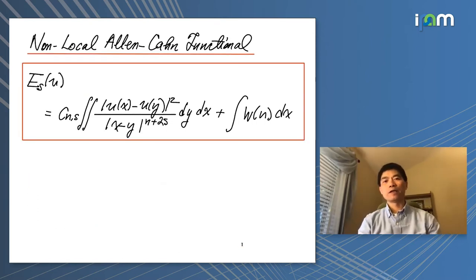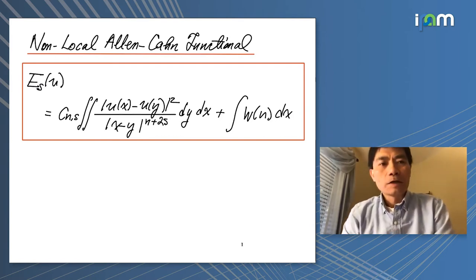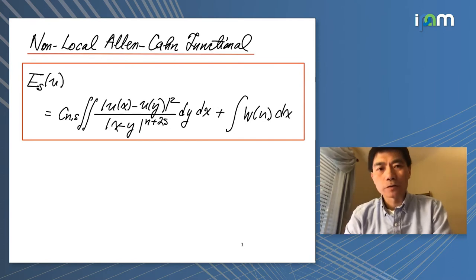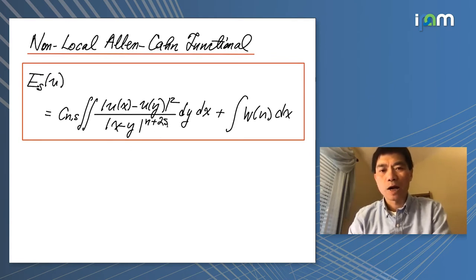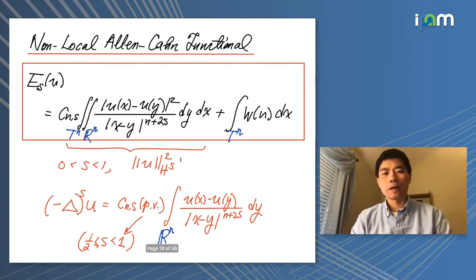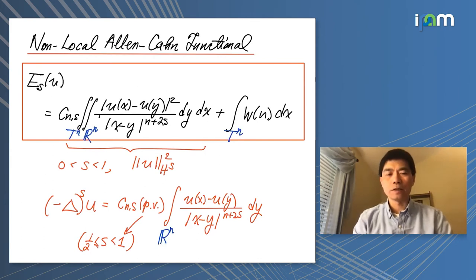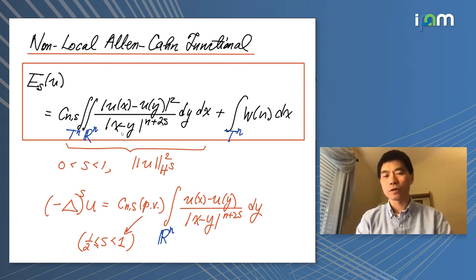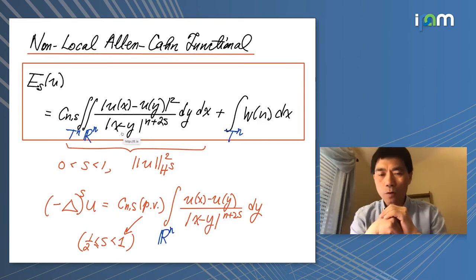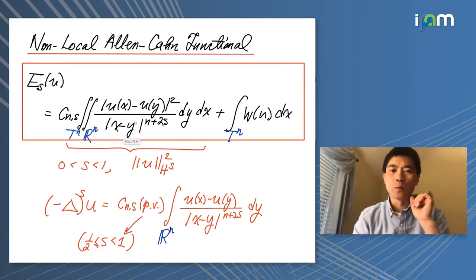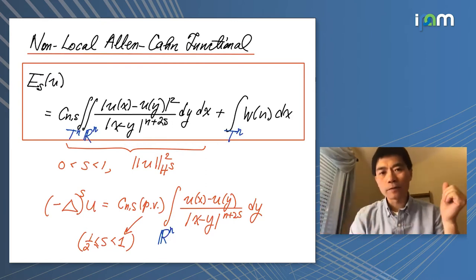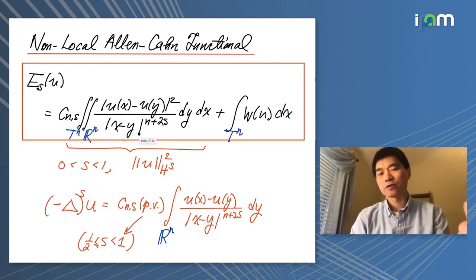Now let me introduce the non-local model. This is the non-local Allen-Cahn functional, which has a non-local Dirichlet norm with parameter s, and a double-well potential. Functionally, where the local case uses an H^1 norm, the non-local case uses an H^s norm. S is between 0 and 1. When s is close to zero, the kernel is less singular but more non-local at large distances. When s is close to one, it is more singular but more localized.